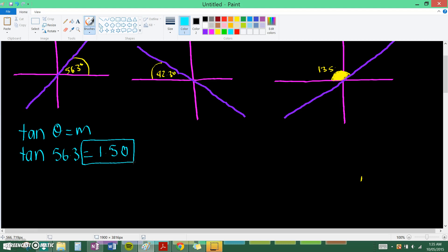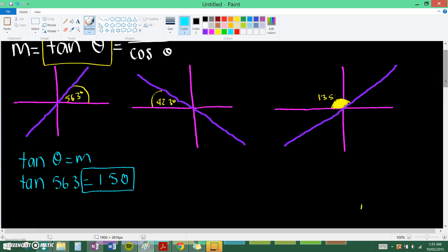Onto the second one. Now we have to figure out what this is. And this is what we're going to be finding out. So we know that tan theta equals m. So I just do tan 180 minus 42.3 equals m. And that equals to negative 0.910 as it should be because the slope is going down.